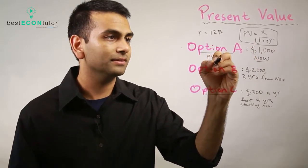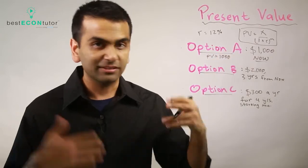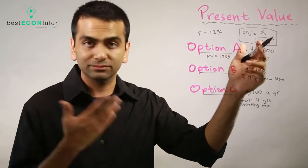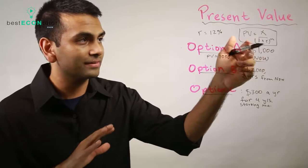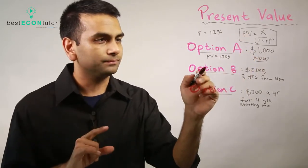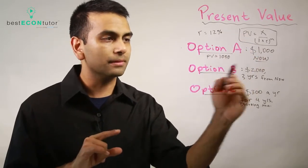simply going to be a thousand dollars, because a thousand dollars given right now is a thousand over one to the zero. So now we want to compare the present value of this guy to a thousand.